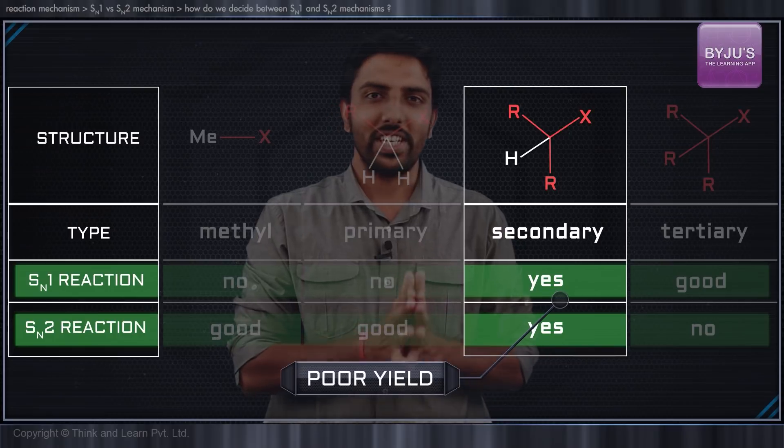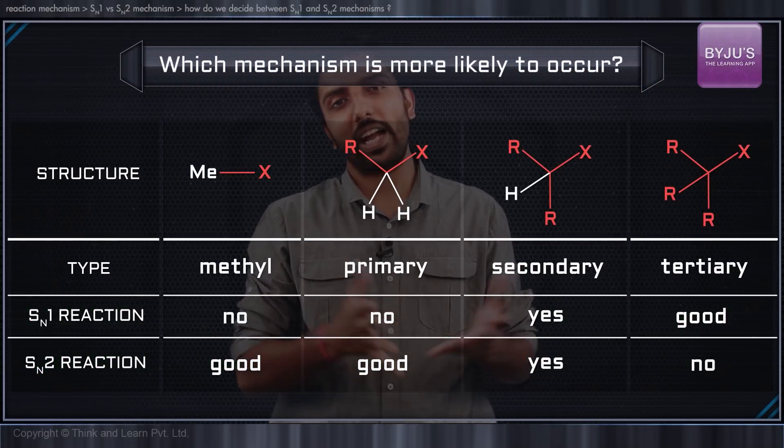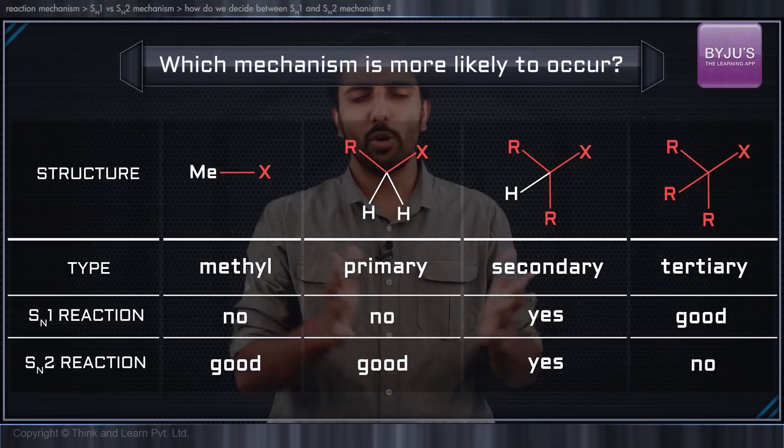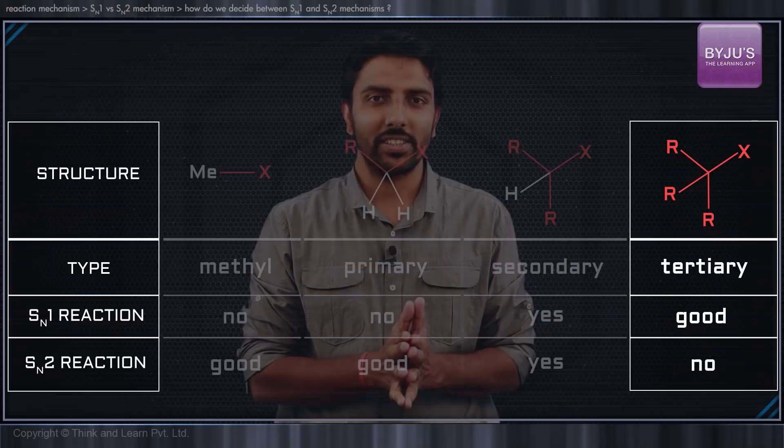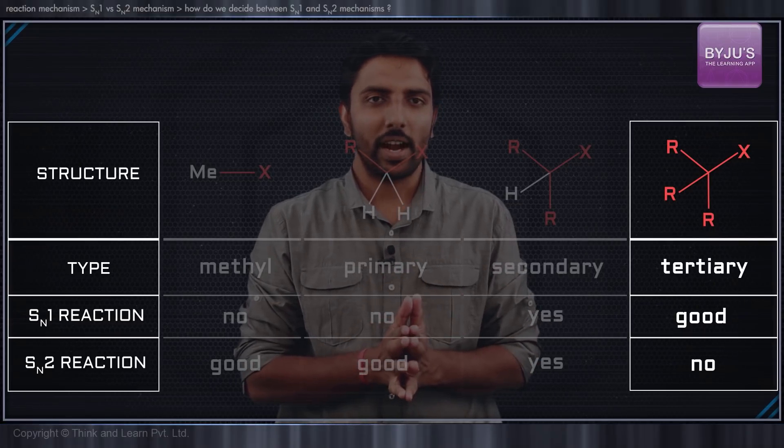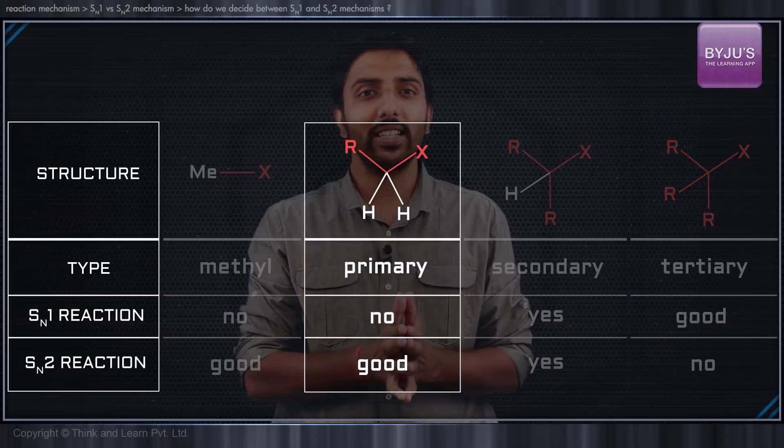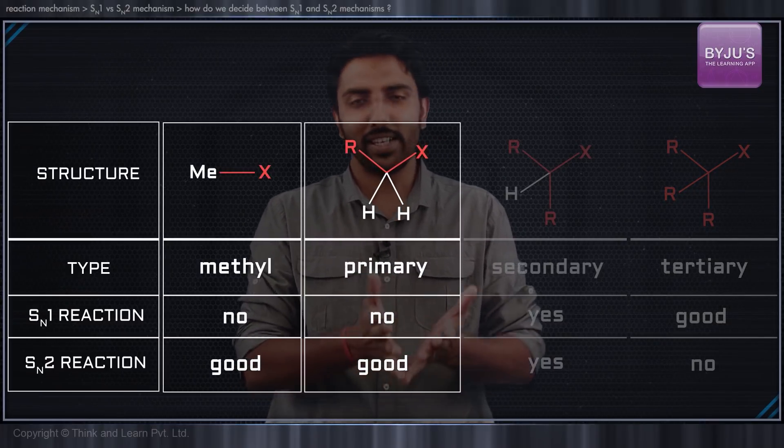So if we are given a substrate and we are asked to determine which mechanism is more likely, how do we go about that? Whenever we have a tertiary substrate, the mechanism is always going to be SN1, and whenever we have a primary substrate or a methyl substrate, we always choose the SN2.